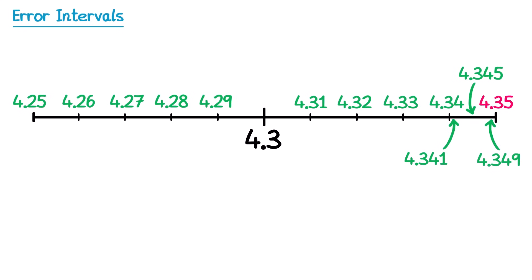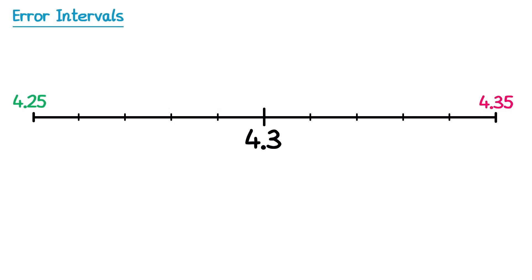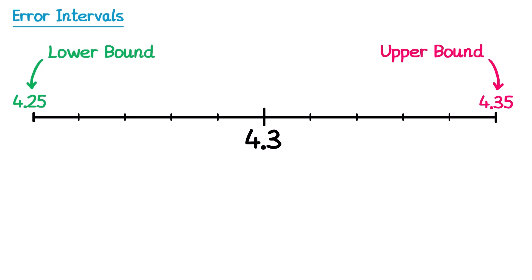The numbers at either end of this interval are important to answer this question. 4.25 is what we call the lower bound, and 4.35 is what we call the upper bound. We can write this down mathematically in the following way.